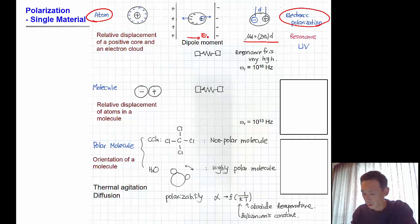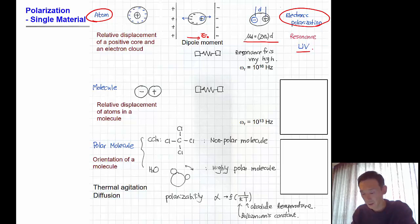The resonance frequency for electronic polarization is very high — it is in the ultraviolet (UV) frequency range, and in terms of frequency it is around 10^16 Hz.